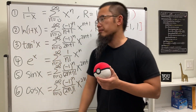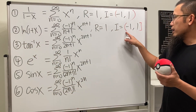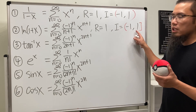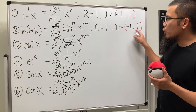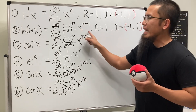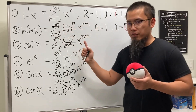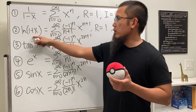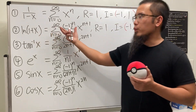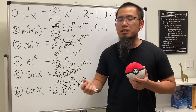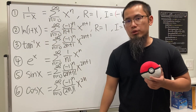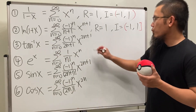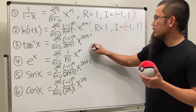One easy way to see this: if you put negative 1 into x, you get ln(0), which is not defined, so we do not include negative 1. However, we do include positive 1 because if you put positive 1 into x, the series converges — in fact we get the alternating harmonic series, which converges to ln 2.